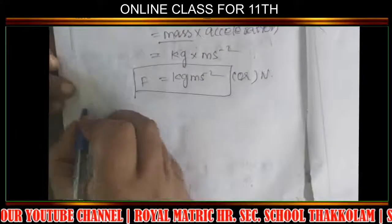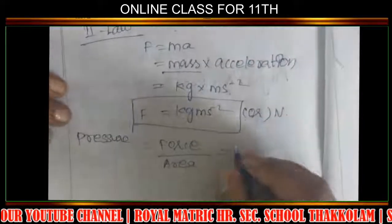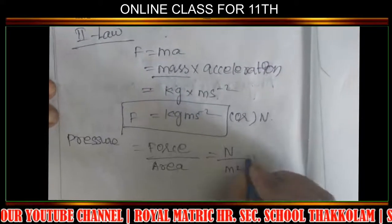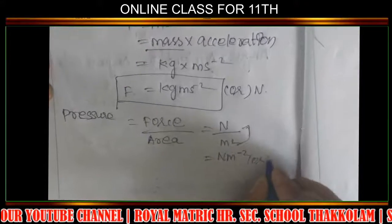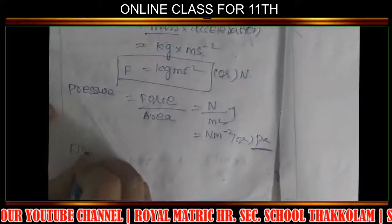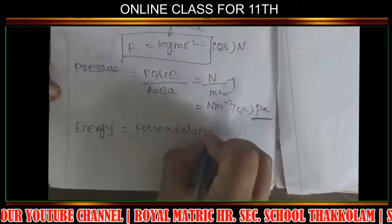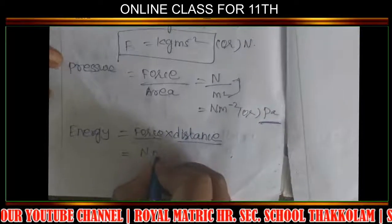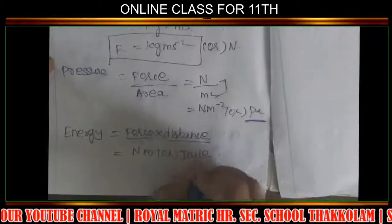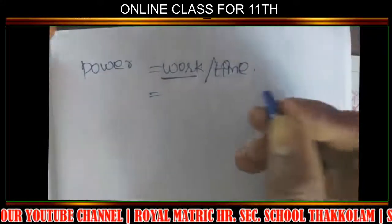Pressure equals force divided by area. Force SI unit is Newton, area is m², so pressure SI unit is N m⁻² or Pascal. Energy equals force into distance. Power equals work divided by time, where work equals energy in Joules.